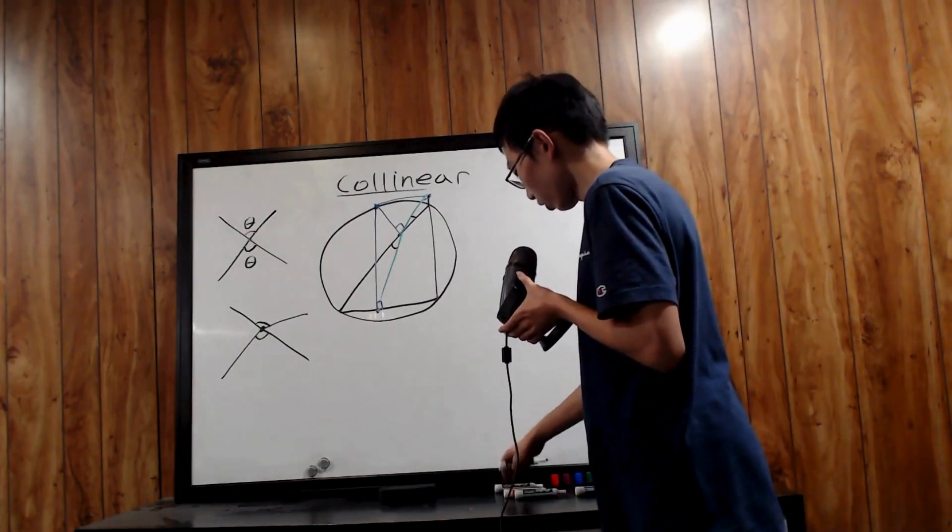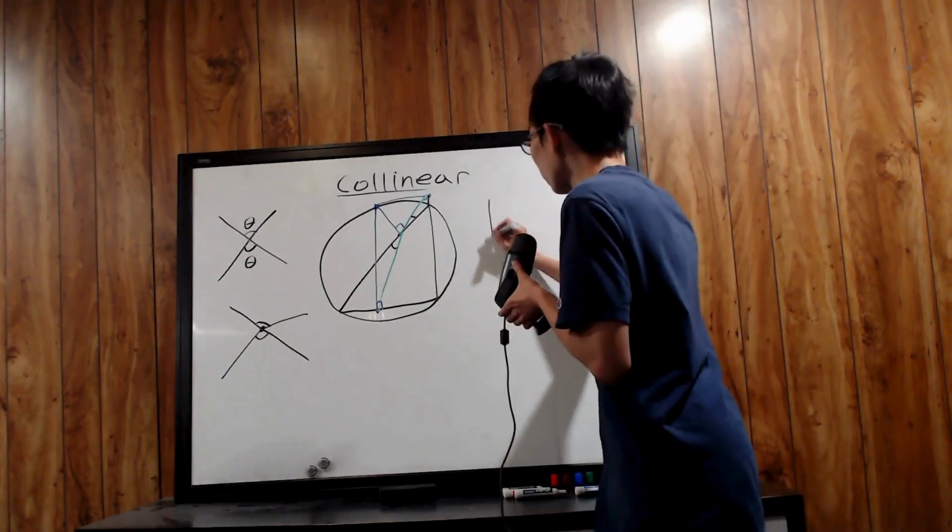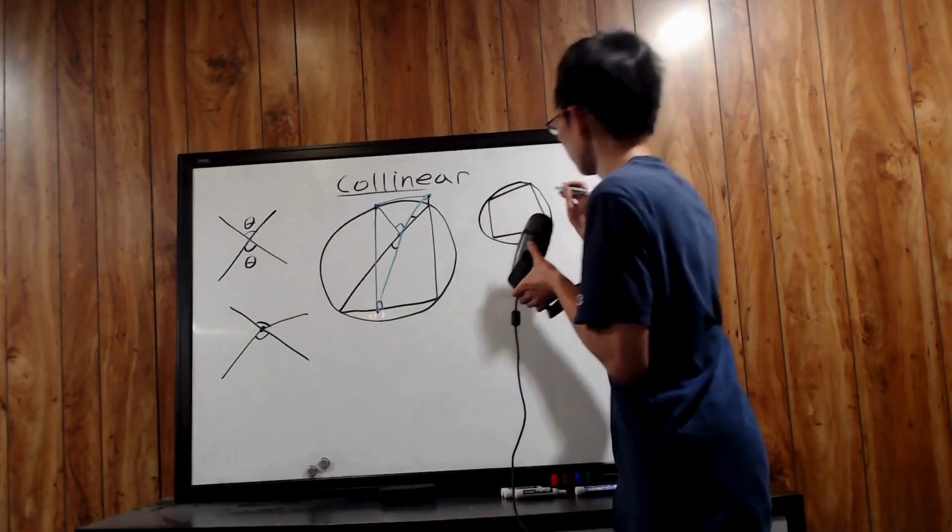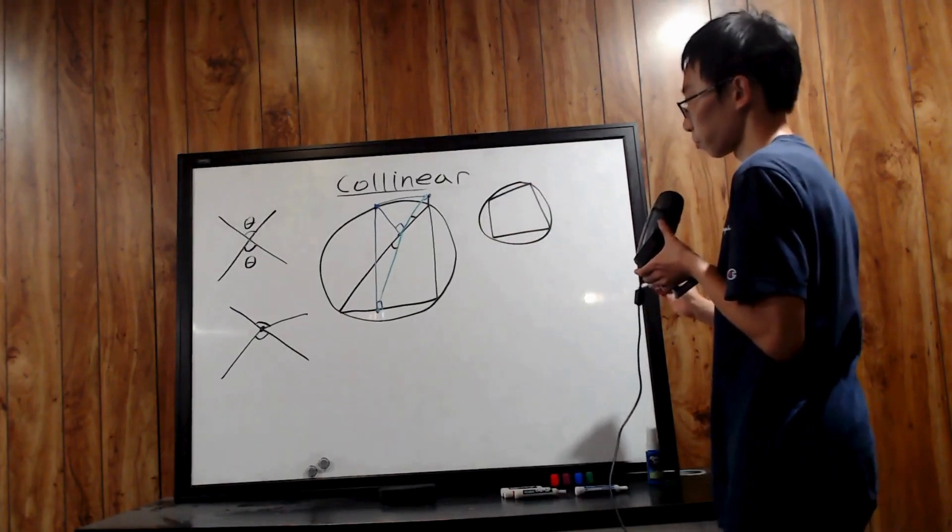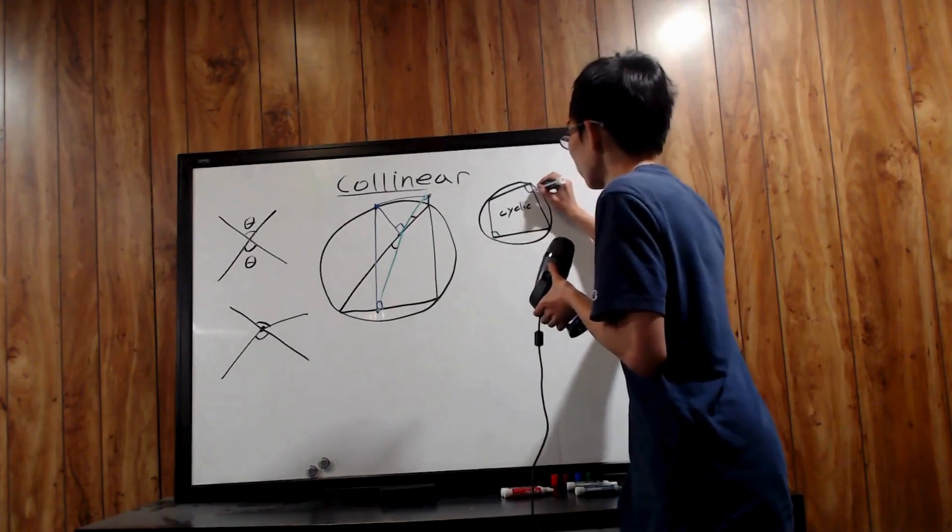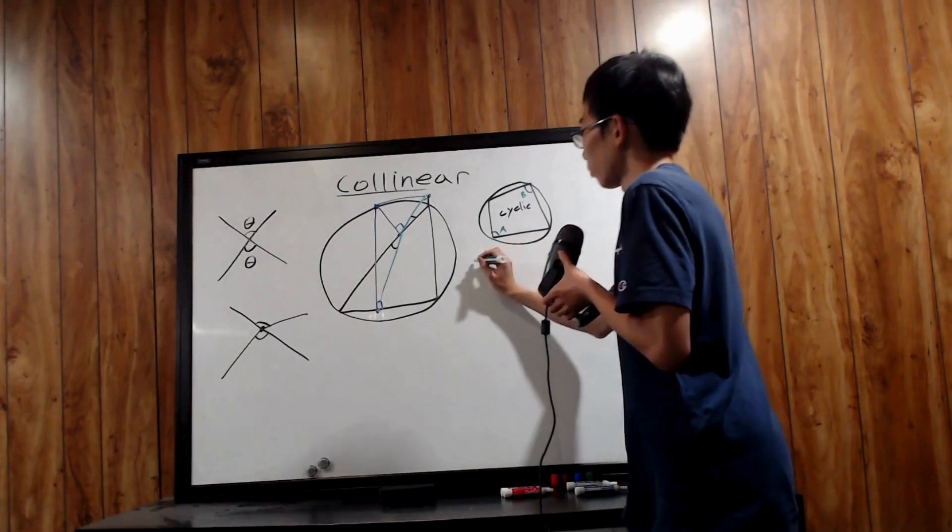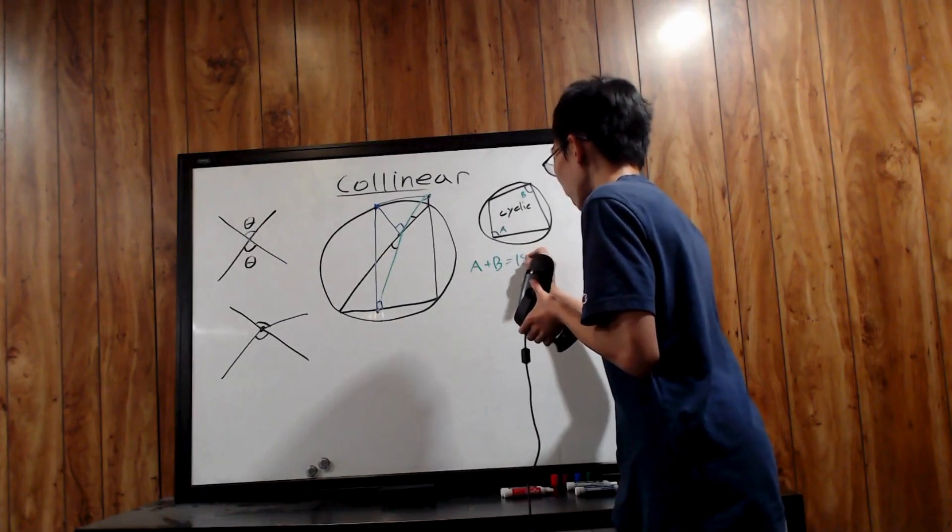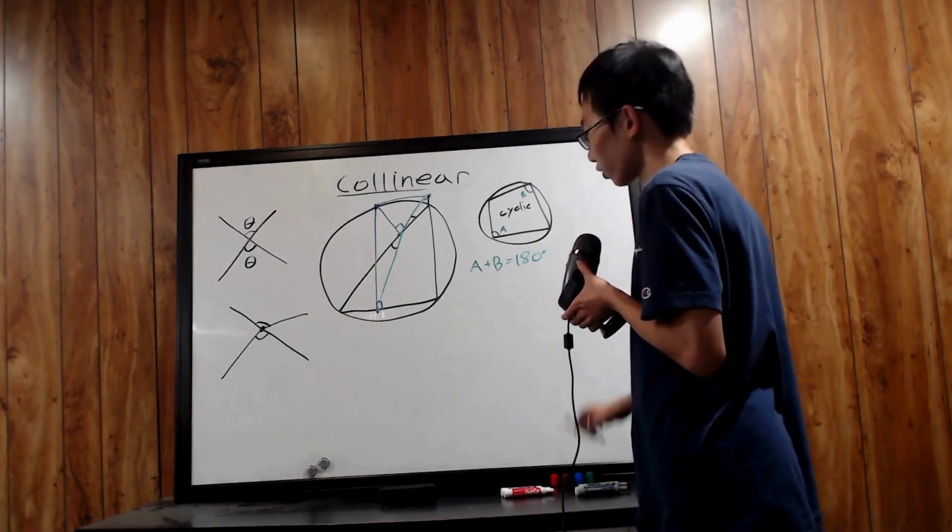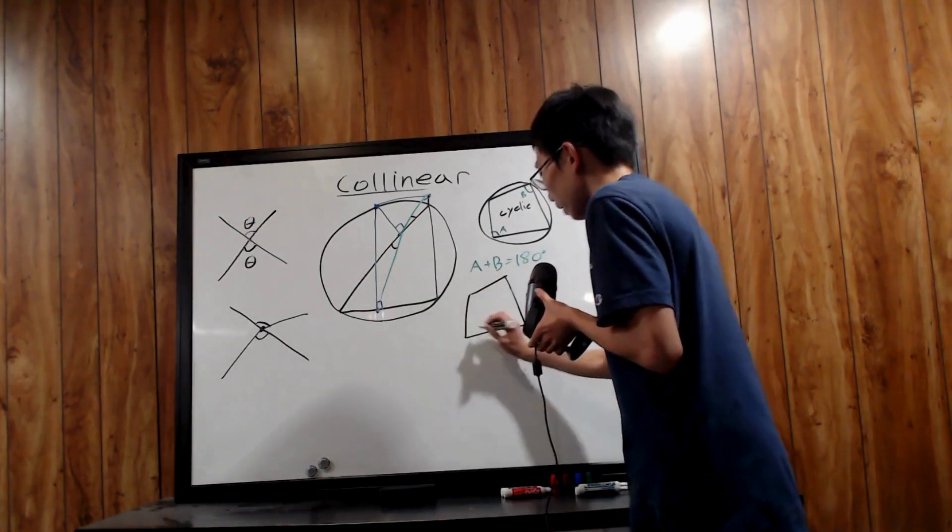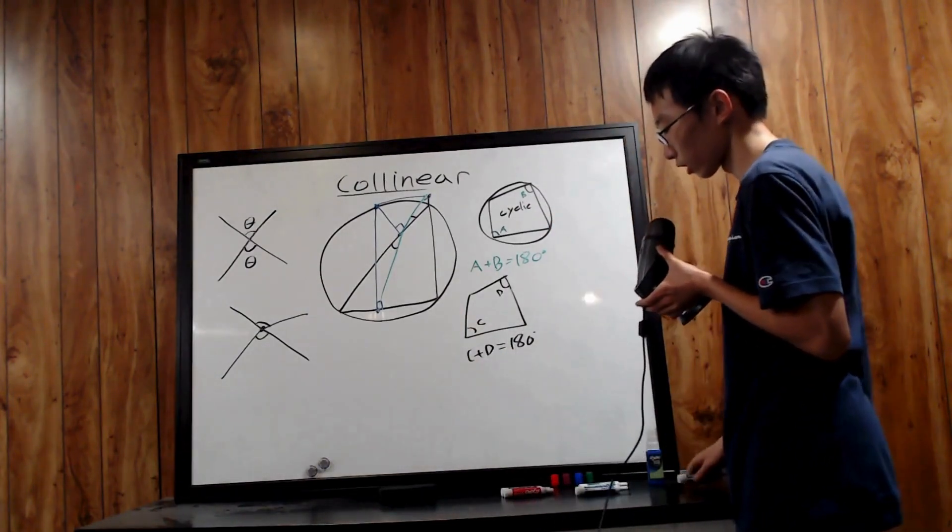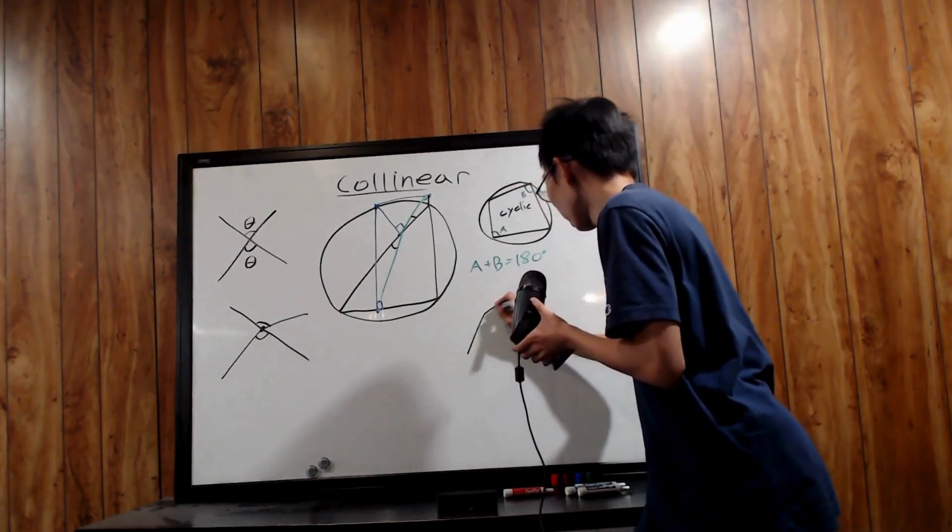We also have more facts that we should know, and this is regarding cyclic quadrilaterals. A cyclic quadrilateral is basically any four-sided shape that you can perfectly inscribe or fit in a circle. So this would be a cyclic quadrilateral four-sided shape. Now cyclic quadrilaterals have a ton of useful properties. For one, if you take a pair of opposite angles and label them as A and B, then we must have, without any exceptions, A plus B equals 180 degrees. Any pair of opposite angles in a cyclic quadrilateral must sum up to 180 degrees.